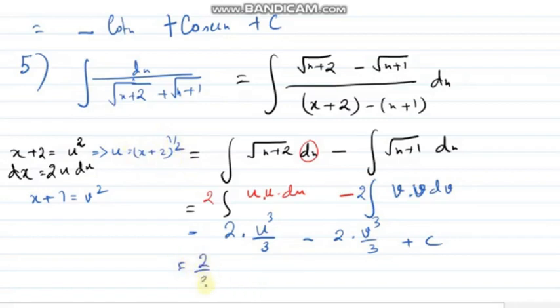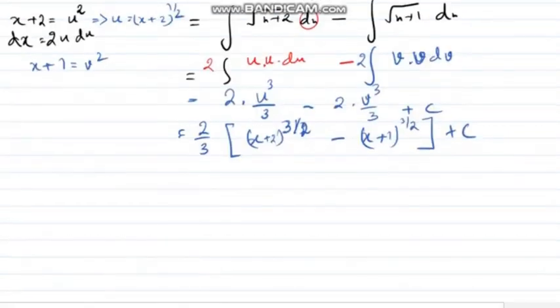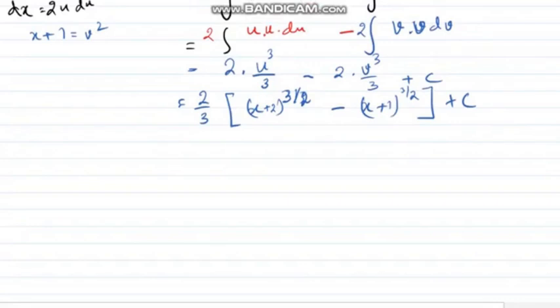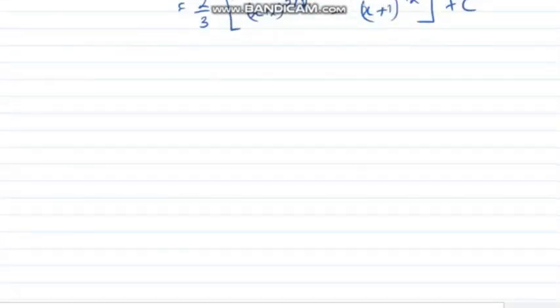So, answer, if I take 2 divided by 3 common, it will be x plus 2 whole to the power 3 by 2 minus x plus 1 whole to the power 3 by 2 plus c. Is it fine? I don't know if you understood till now. So, I am trying to complete as many as sums on the basic thing. After that, you need to practice and whenever you are facing problem in any sum, please just write in the comment box so that I can further send you the video of that sum.